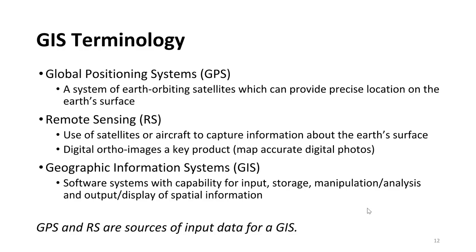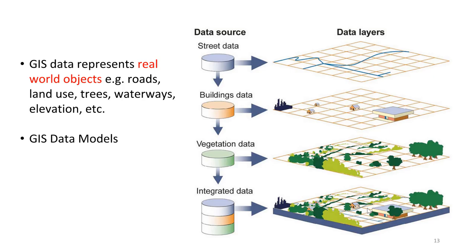The other term that I might use is remote sensing. Remote sensing is the use of satellites or aircraft to capture information from the Earth's surface. Digital ortho images are a key product of this - these are map accurate digital photos, and this all makes up the science of remote sensing. We use these sorts of images and satellite imagery to do remote sensing. And then lastly GIS, geographic information systems, is a software system with the capability for inputting information, storing information, manipulating and analyzing this information, and then displaying it in the form of a map. So GPS and remote sensing are sources of input data for GIS.